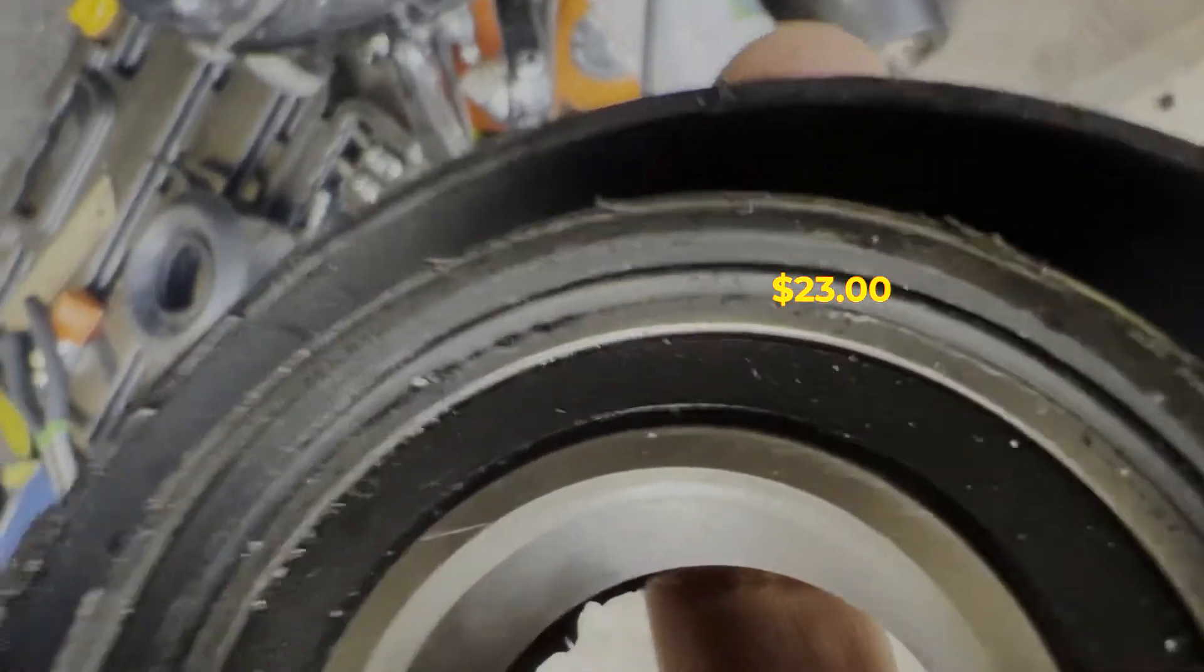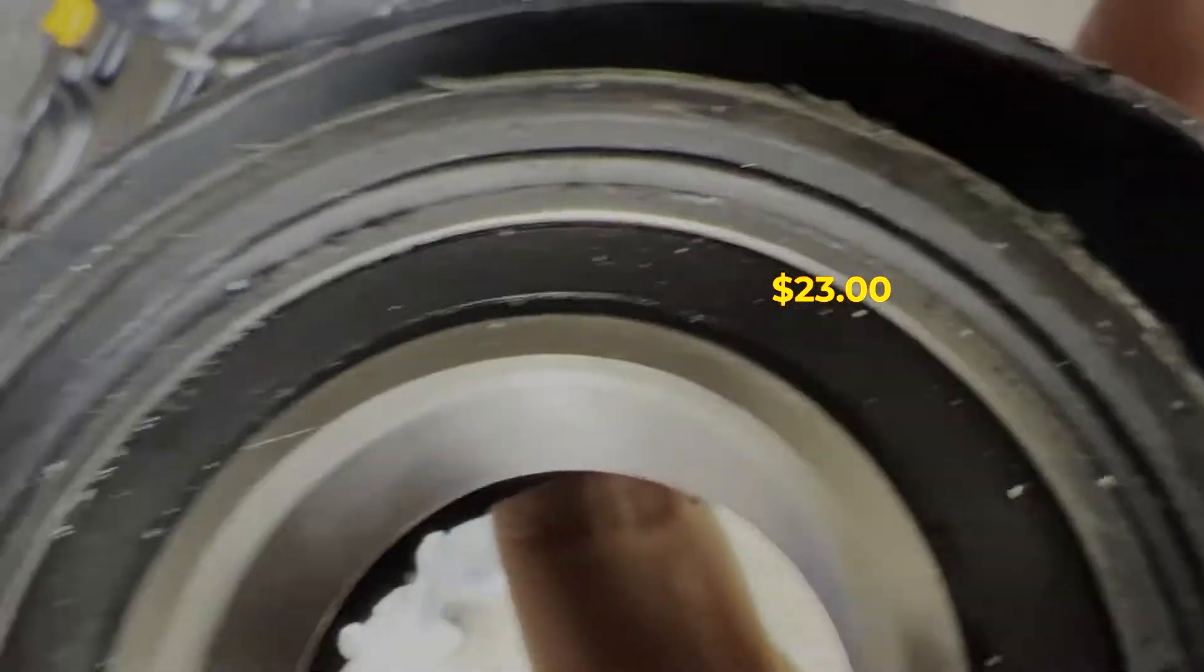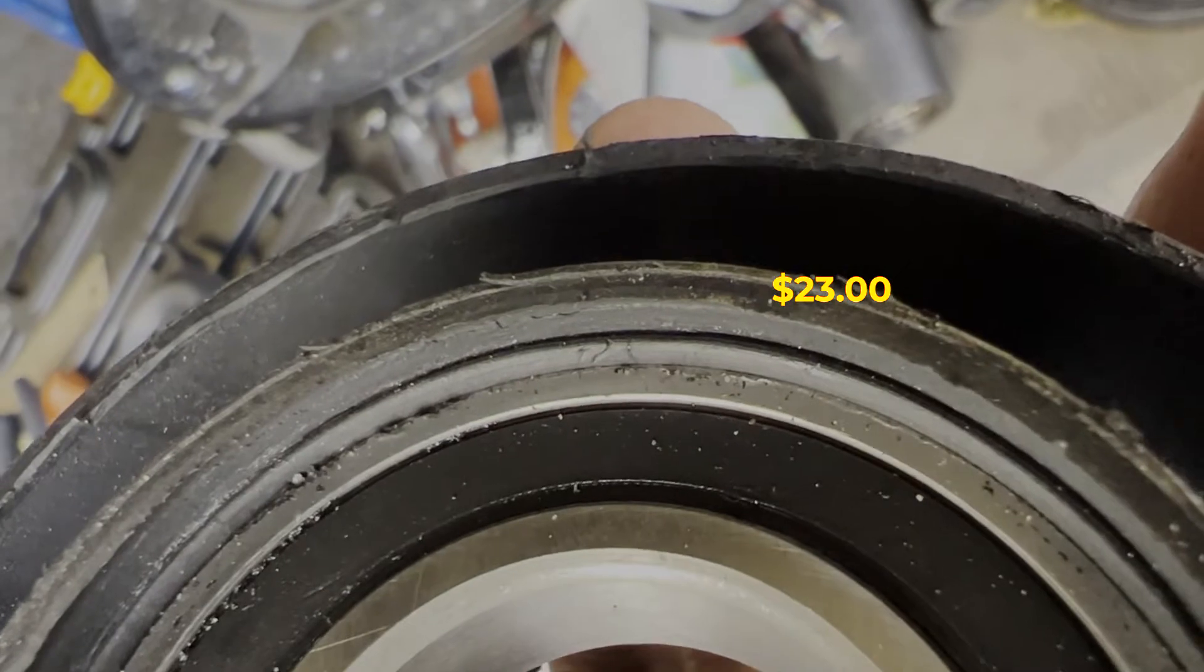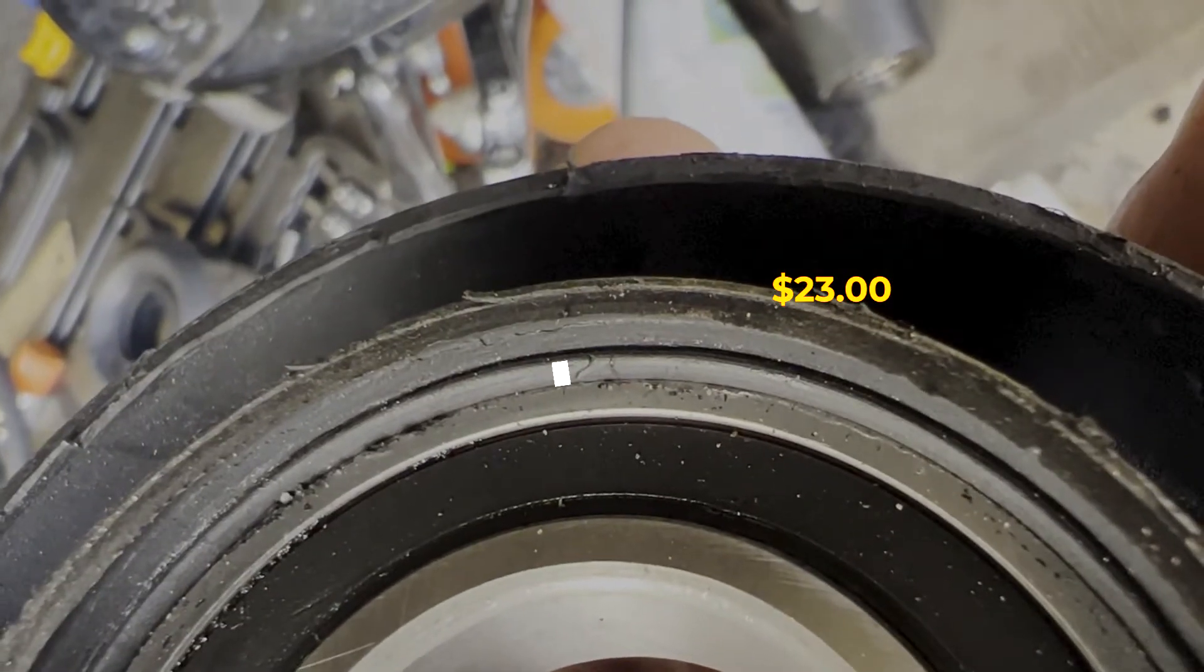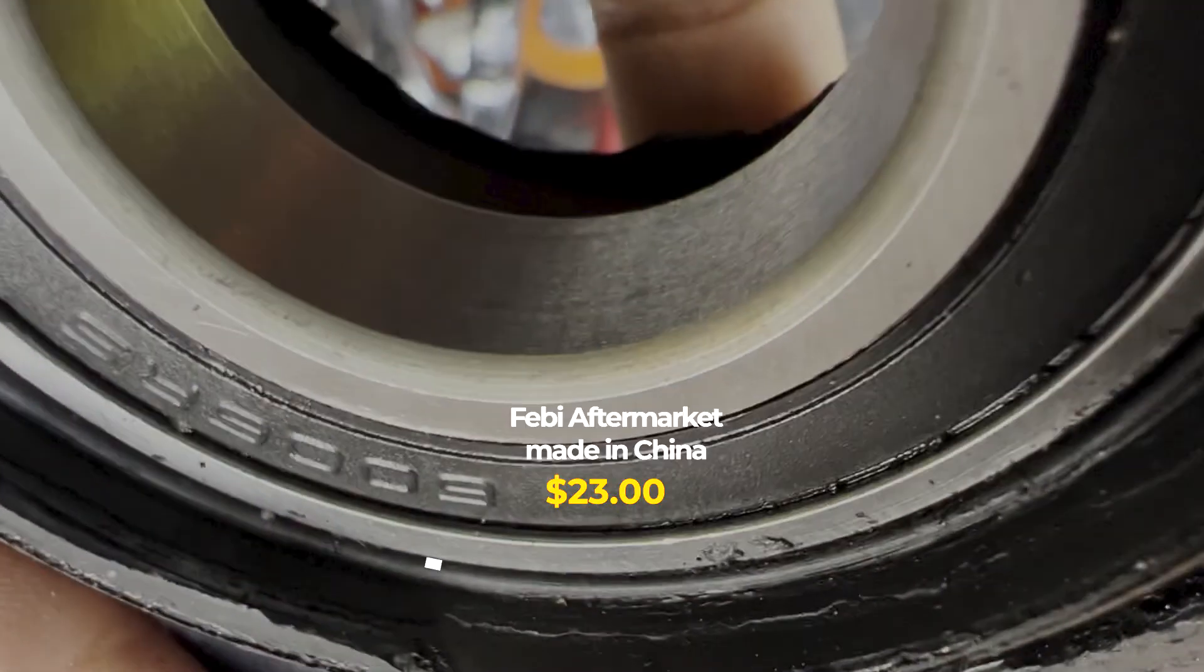As you can see, the top, this is the top of the brace. You see where the metal comes into contact with the rubber? That's thicker on the top than it is on the bottom.